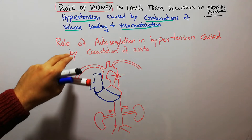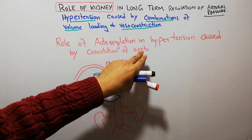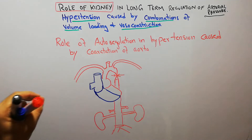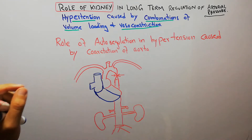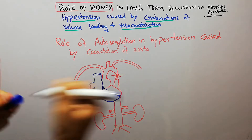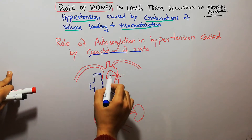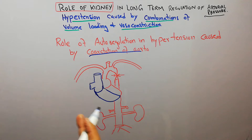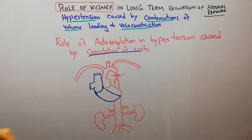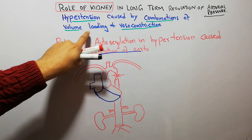Today in this lecture we are going to discuss the role of autoregulation in hypertension caused by coarctation of aorta. We previously discussed coarctation of aorta, which is simply a narrowing of the aorta due to some reason. Due to coarctation of aorta, the kind of hypertension which occurs is basically a combination of volume loading and vasoconstriction.